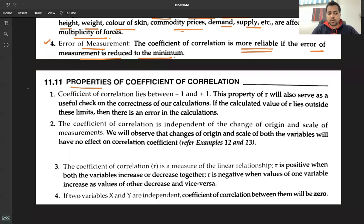What are the properties? Important question for theory and MCQ-based exams. The coefficient of correlation lies between minus 1 and plus 1. This property will serve as a useful check on the correctness of our calculations. If a correlation is 2.50, why? It cannot be more than 1 or less than minus 1. If the values are outside these limits, then there is an error in the calculation.